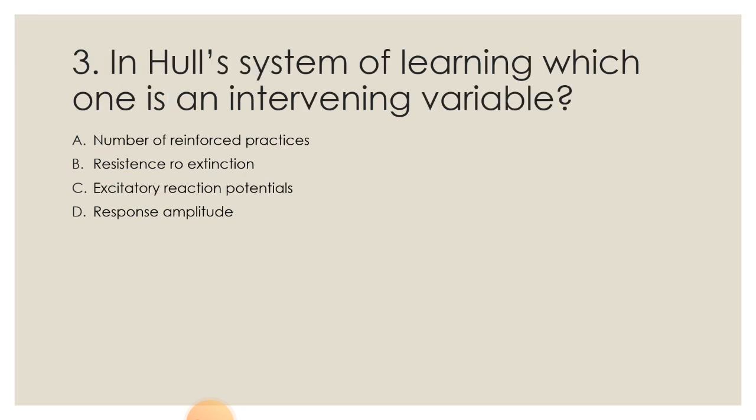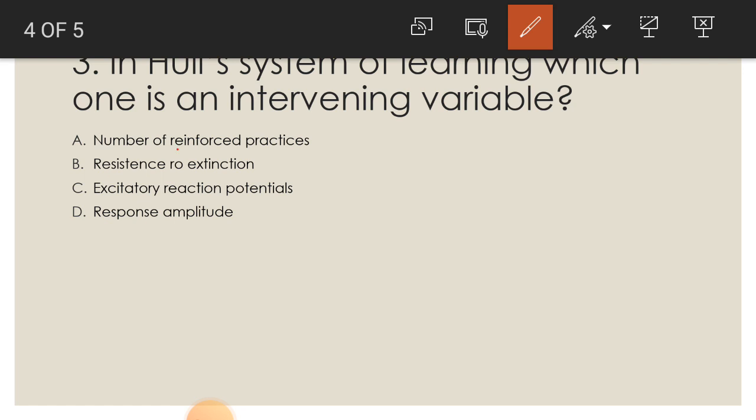And the third question is, in Hull's system of learning which one is an intervening variable? A: number of reinforced practices, B: resistance to extinction, C: excitatory reaction potential, and D: response amplitude. So the correct answer is C: reaction potential, excitatory reaction potential.